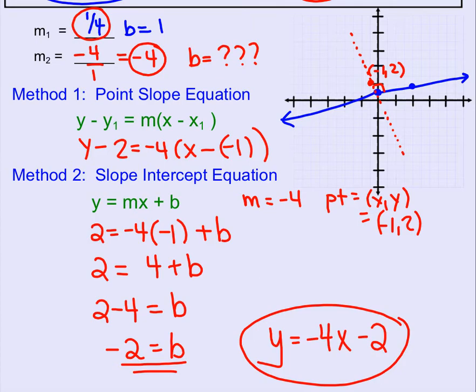We can go ahead and graph this a little bit better now than what I was doing, a rough sketch. Y-intercept of negative 2, slope of down 4, right 1, or up 4, left 1.